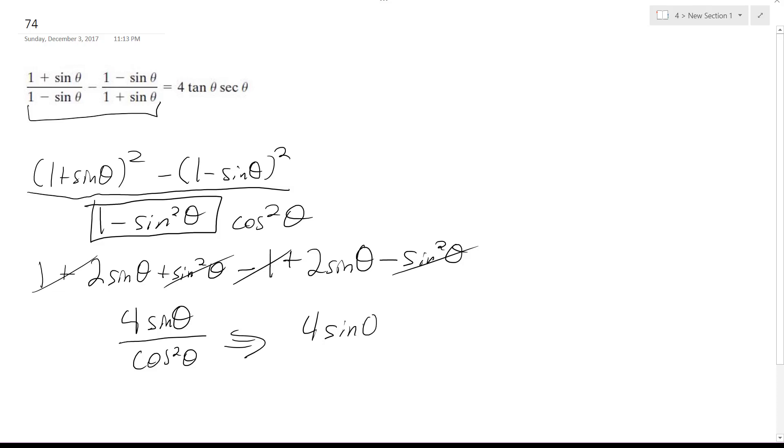And you can actually convert this into 4 sine theta and then over cosine theta. And I can separate the cosine to 1 over cosine. And this is the same thing as saying secant theta, and this is the tangent theta. So it becomes 4 times tangent theta times secant theta.